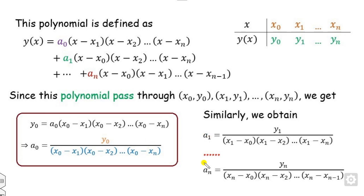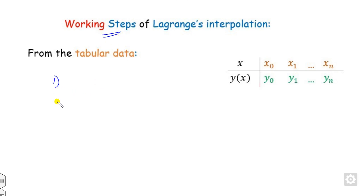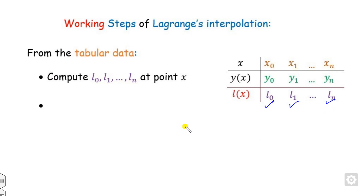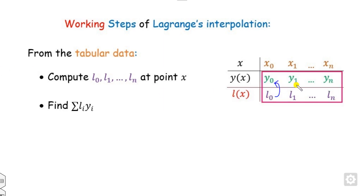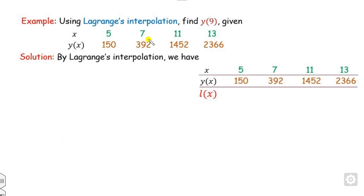Once you find the values of a₀, a₁, and aₙ, you substitute them back and summarize the result. This formula is called the Lagrange interpolation formula, where lᵢ is defined as shown. To remember the formula, there are two working steps: first, calculate the values l₀ through lₙ from the tabular data; then multiply each lᵢ by the corresponding yᵢ and sum them to get the required answer.